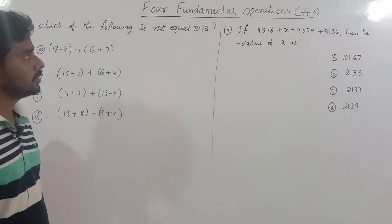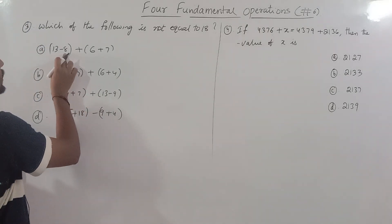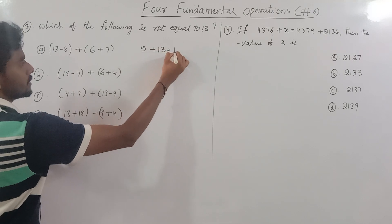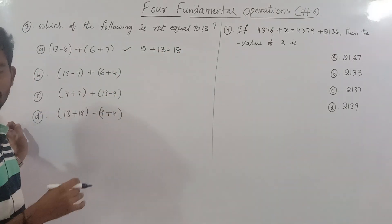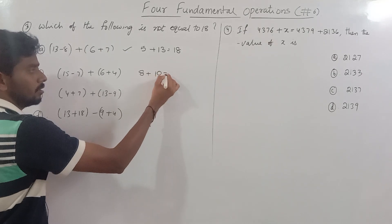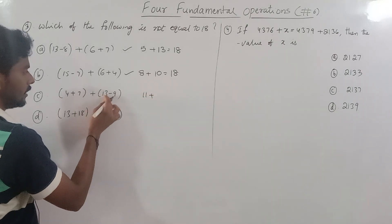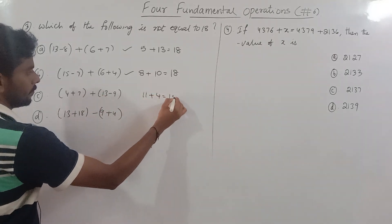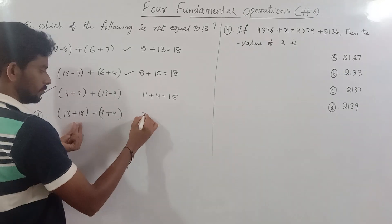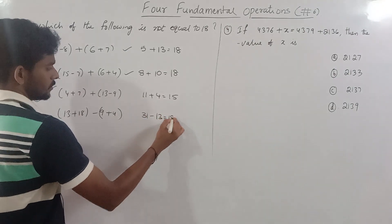Which of the following is not equal to 18? So 13 minus 8 equals 5; 6 plus 7 is 13; 5 plus 13 is 18. 15 minus 7 is 8; 6 plus 4 is 10; 8 plus 10 is 18. 4 plus 7 is 11; 13 minus 9 is 4; 11 plus 4 equals 15. Then 13 plus 18 is 31; minus 13 cancels down to 18. So option C is the correct answer.